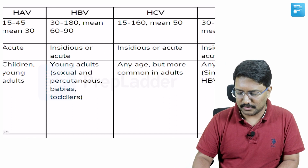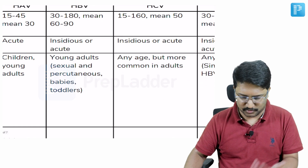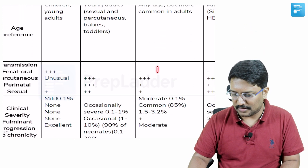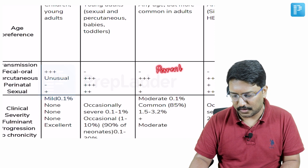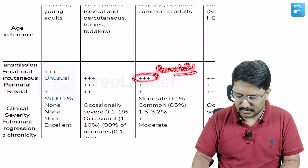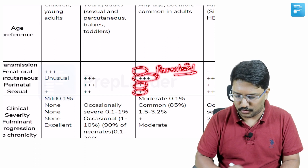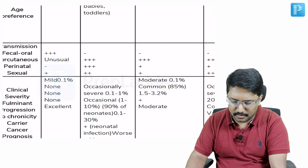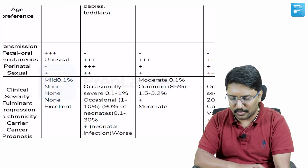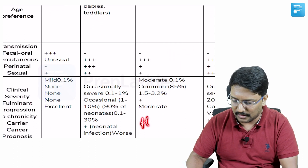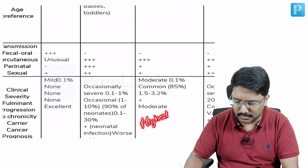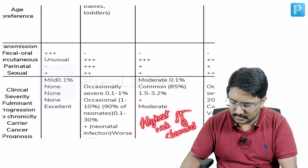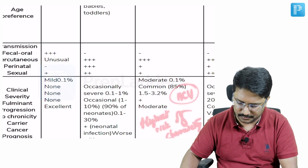In terms of age preference for HCV, it can affect any age but is more common in adults, who are more vulnerable for transmission. The mode of transmission is parenteral — percutaneous, perinatal, and sexual — with no fecal route of transmission. In terms of severity, it is not very severe, but chronicity is very common. Among all the individual viruses, HCV has the highest risk of chronicity.